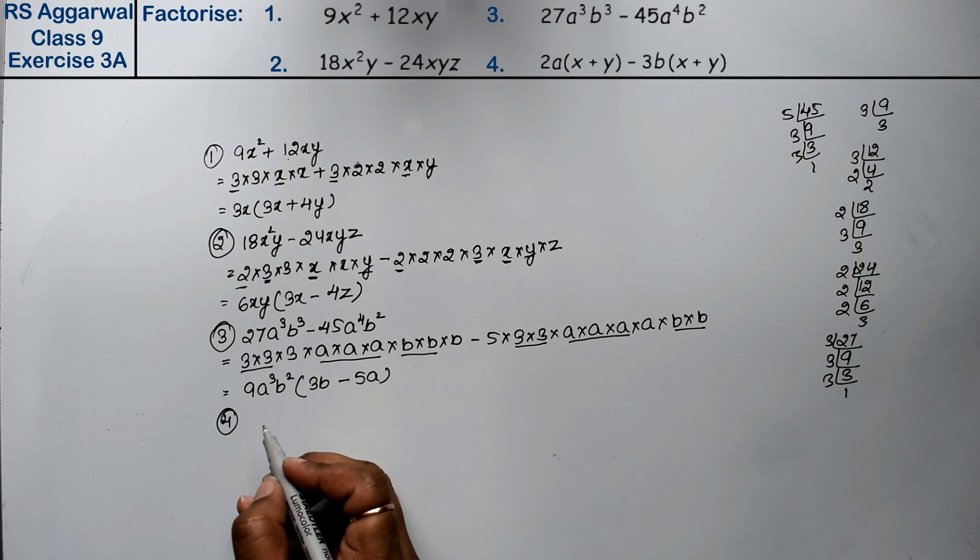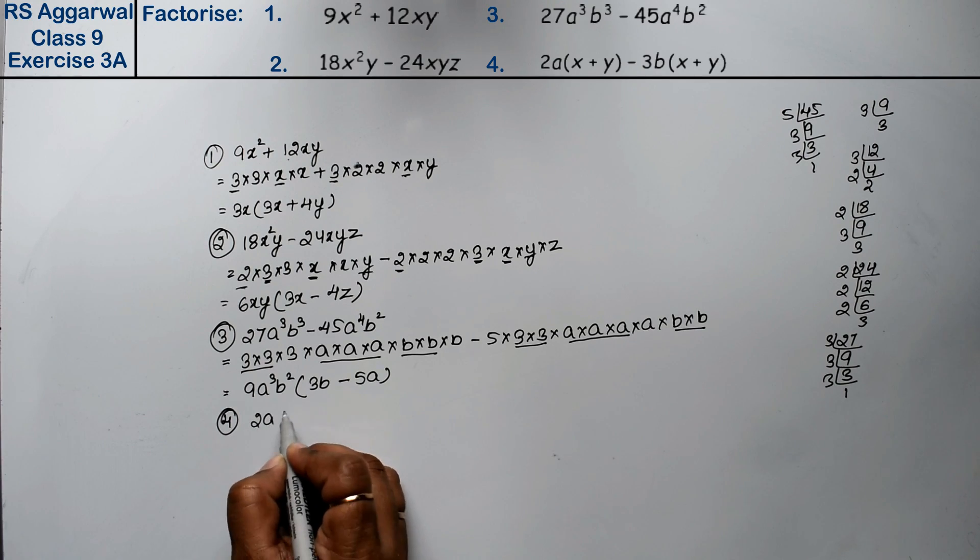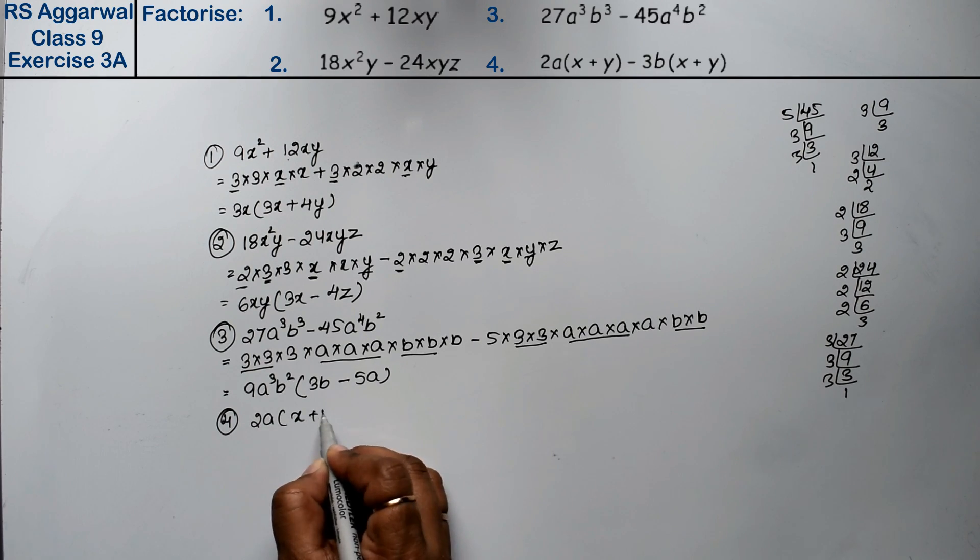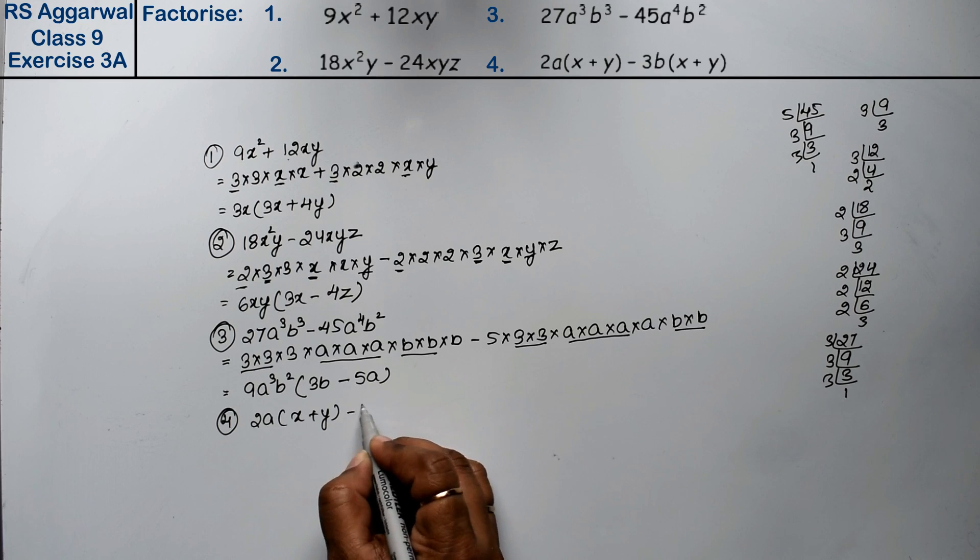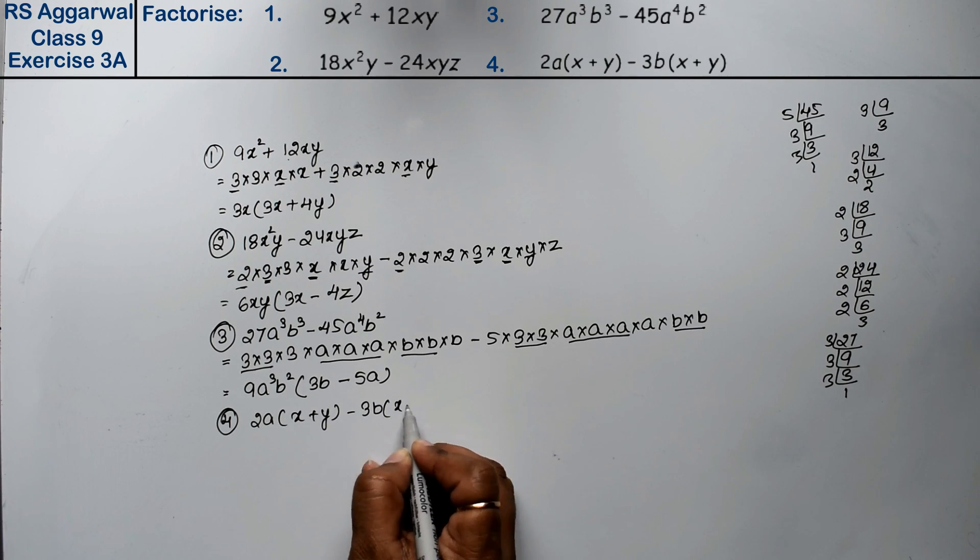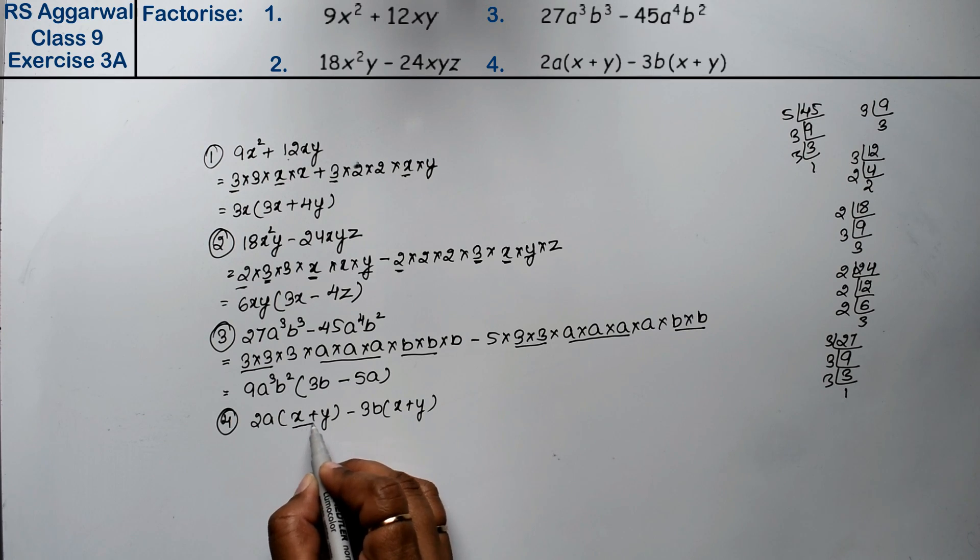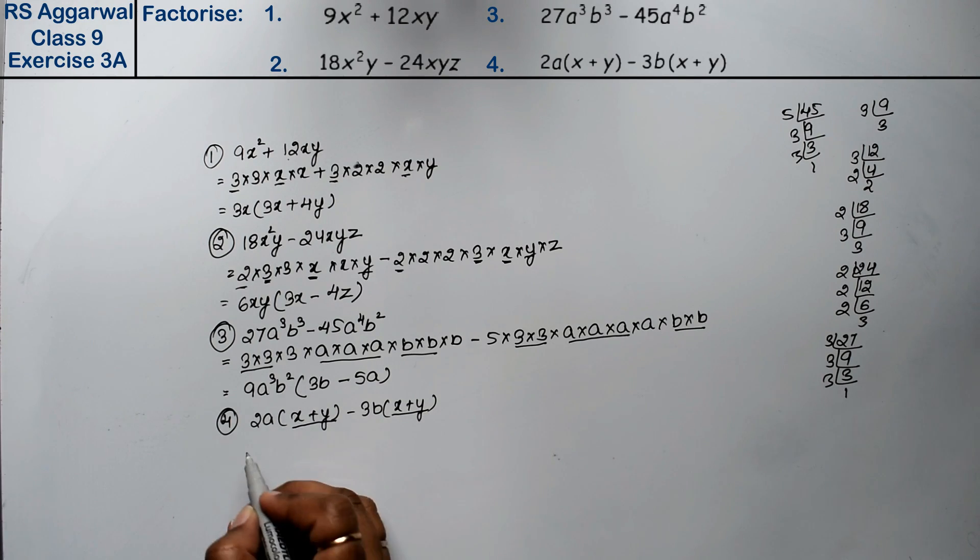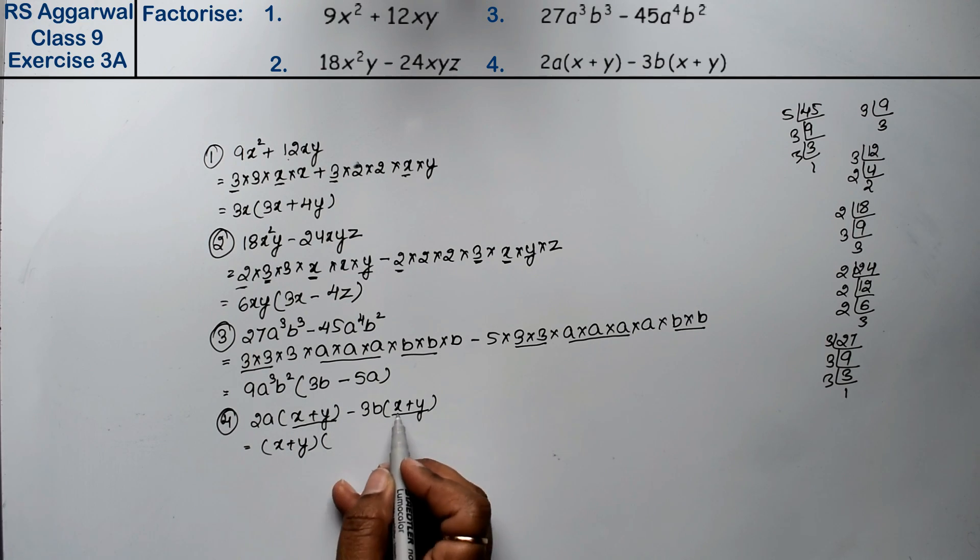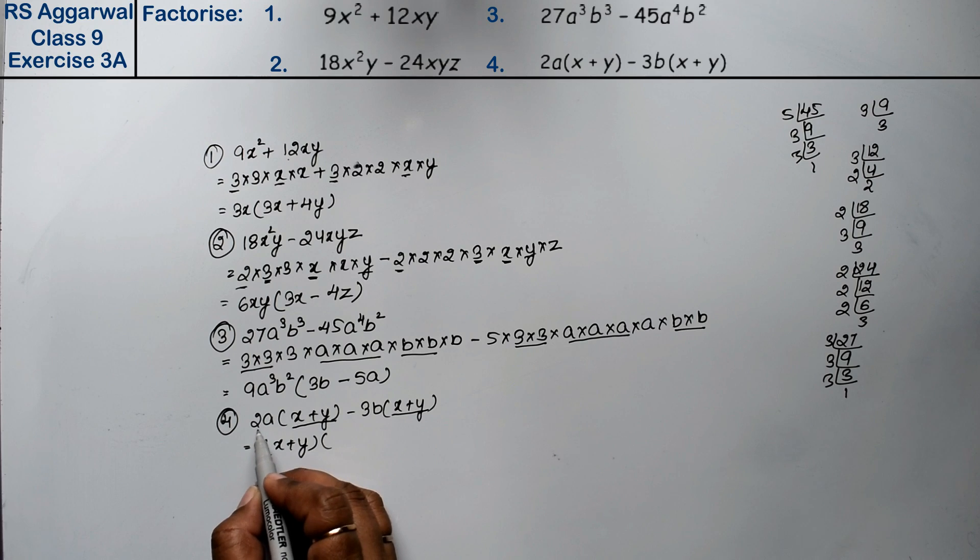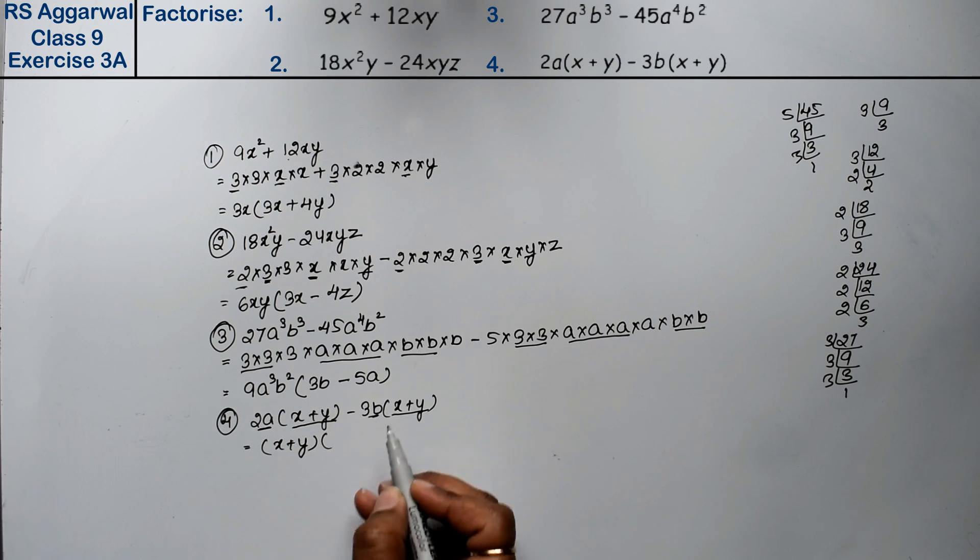Let's do 4th part. 4th part is 2a(x + y) - 3b(x + y). Friends, if you can see both of them, you can see x + y is common. So x + y is common. Right? Now what will be left? If x + y is common, this is 2a and this is 3b. So 2a - 3b is the answer.